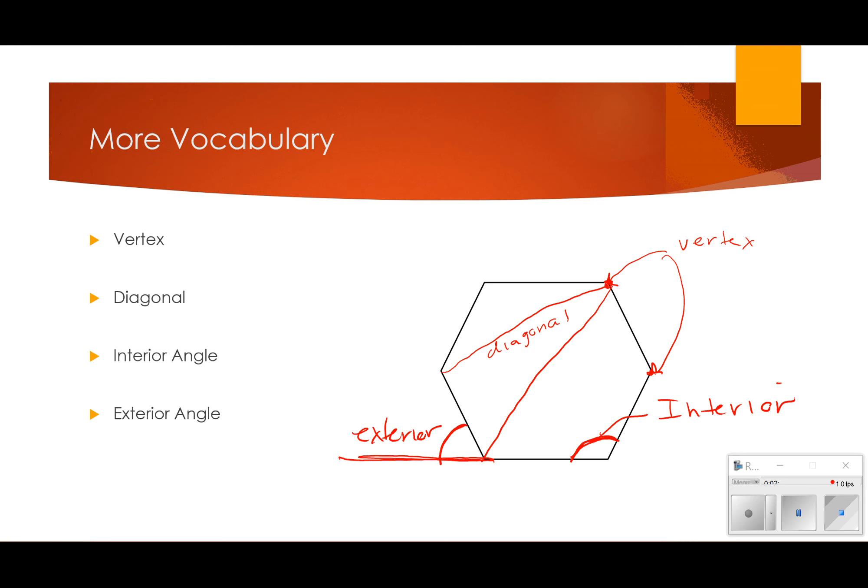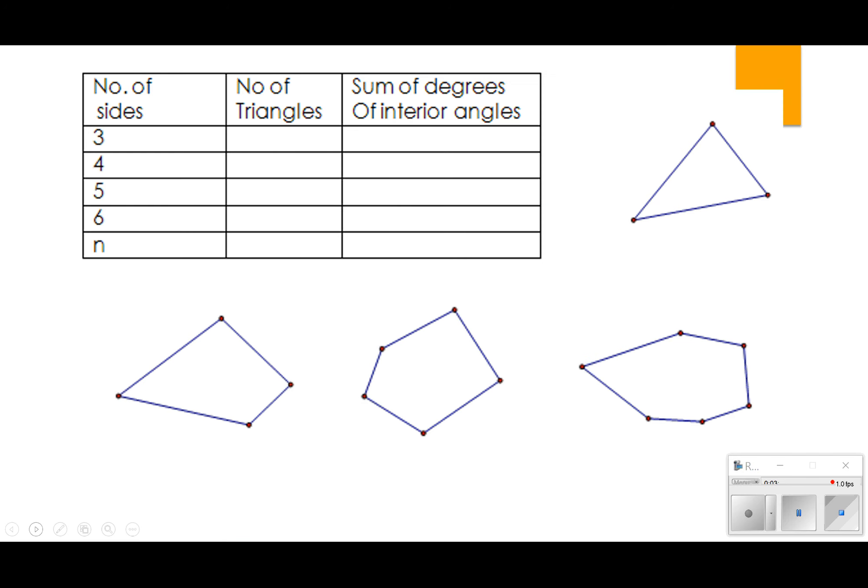So those are just some vocabulary that you need to know for polygon. You also need to know the different names for the polygons. Ms. Hogan went over them with you. So you need to make sure you know three through ten and number twelve, a dodecagon. So you need to know those vocabularies. I'm not going to teach that. You need to look that up on your own.